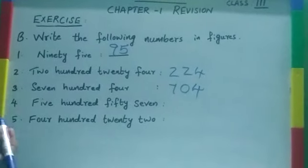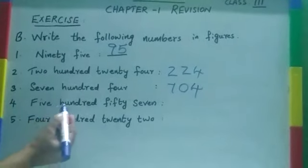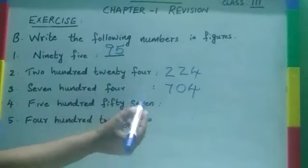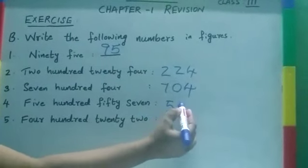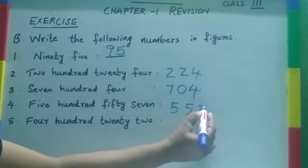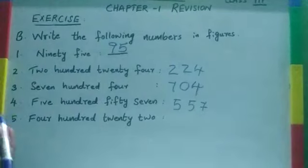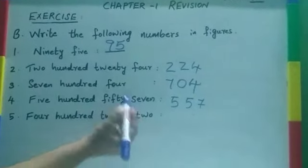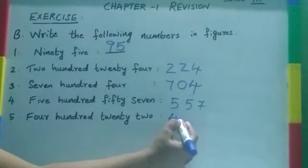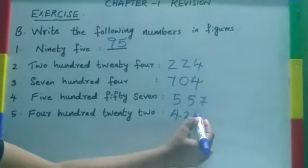704. Now, fourth one, 557. How to write? 557. Next, fifth one, 422. 422.